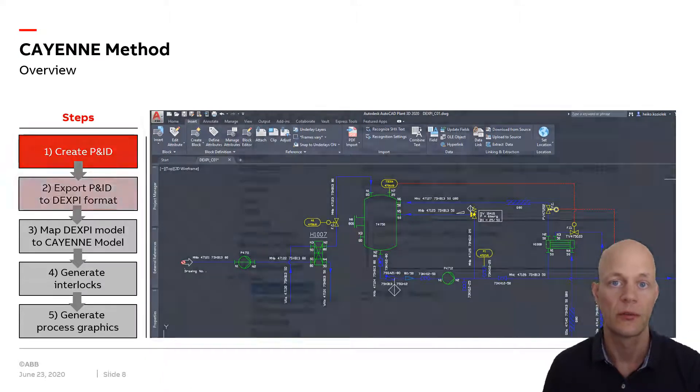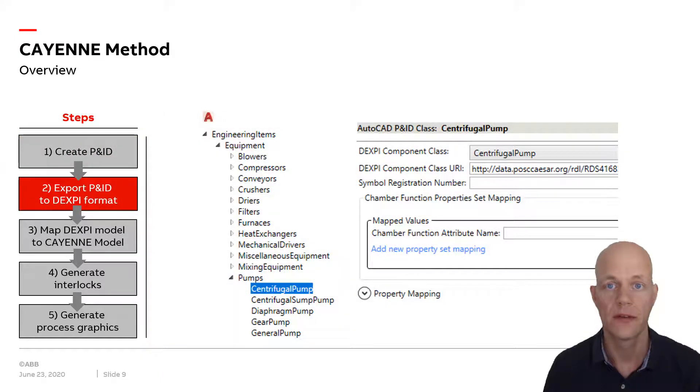Then you use an exporter from the CAD tool vendor to create a DEXPI model out of the CAD drawing. This requires the mapping of the internal CAD tool classes, for example, the AutoCAD P&ID class will be mapped to the DEXPI component class. There's also a standard property mapping that you can configure. Once you have that, you have an XML file which represents the DEXPI model.